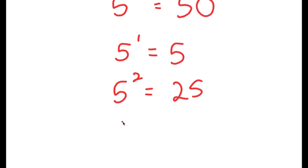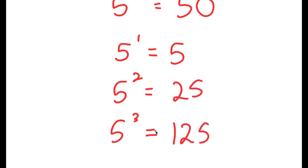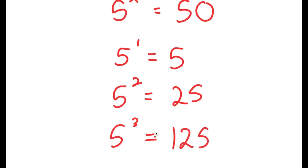Now if x equals 3, then I have 5 to the power of 3, which is 125, and this is way too high. So we know that the value of x is going to be somewhere in between 2 and 3, meaning it's going to be a decimal.